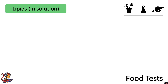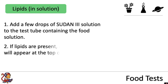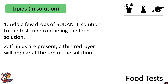A different test that you could use for testing for lipids in solution is to add a few drops of Sudan III solution to the test tube containing the food solution. If lipids are present a thin red layer will appear at the top of the solution.